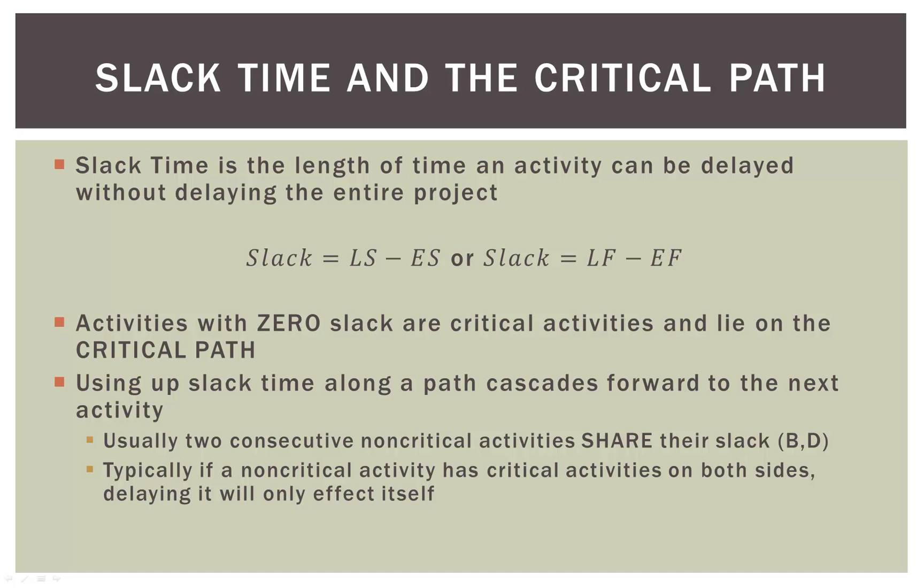Now if a non-critical activity — meaning it has slack — has critical activities with no slack on both sides, delaying it will only affect itself. Some activities are kind of islands by themselves, with a critical activity on one side and a critical activity on the other, so the slack in the middle activity only affects itself and it could potentially be delayed quite a long time. All this will make more sense when we actually do the diagram in the second video.